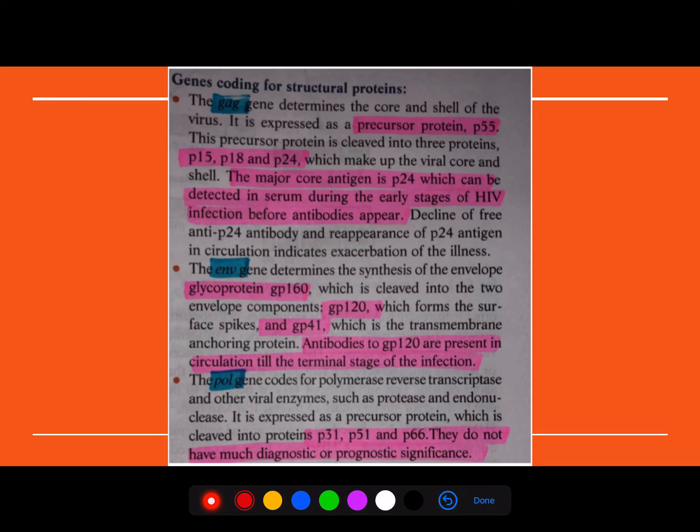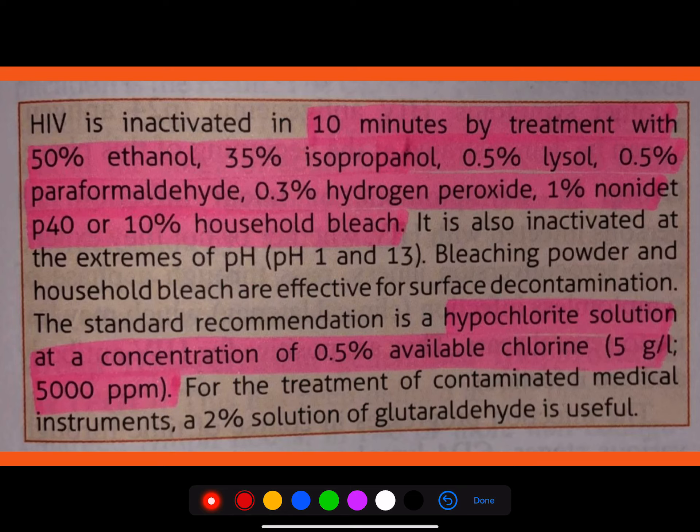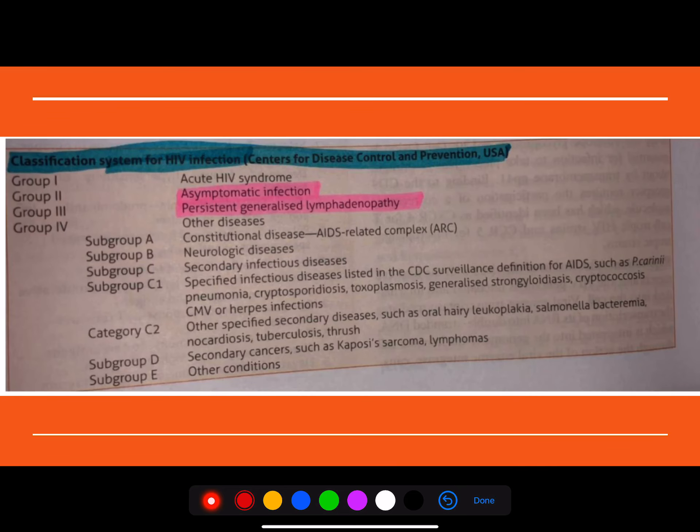So the next one is again the gene overlapping, the gene coding structures. What is Gag gene? What is envelope gene? What is Pol gene? So all these are very, very important. And do make a note about these lines which are standardly recommended lines for disinfection and everything related to HIV patients.